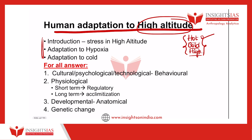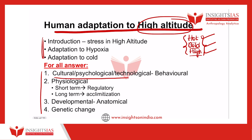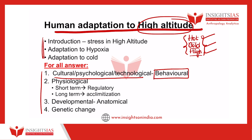For all your answers, whether it is hot, cold, or adaptation to high altitude, your answers should contain these four subheadings. One is cultural, psychological, or technological — that is behavioral adaptation. What does man do culturally? What are the various cultural and technological aspects that help him better adapt to his environment? People inhabiting a particular environment have developed various technologies and cultural means over time to better adapt to and harness energy from that environment.